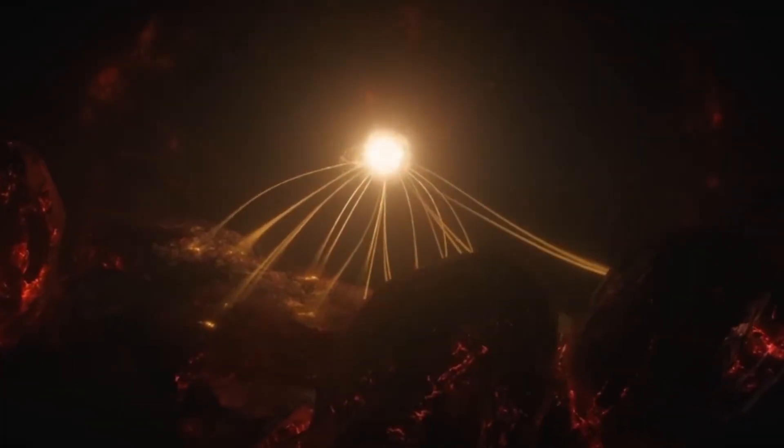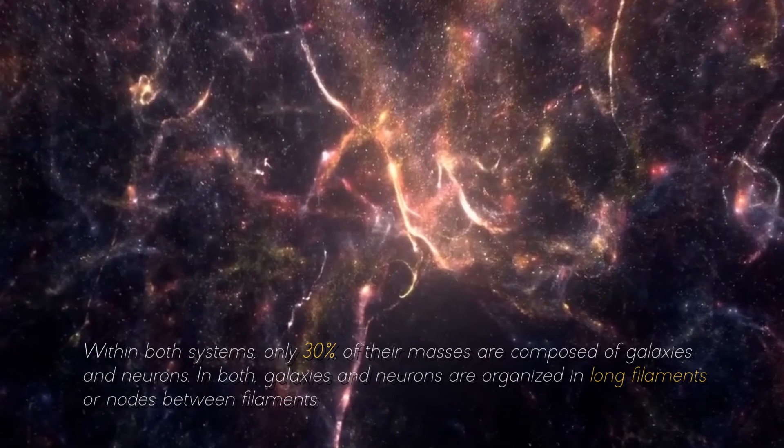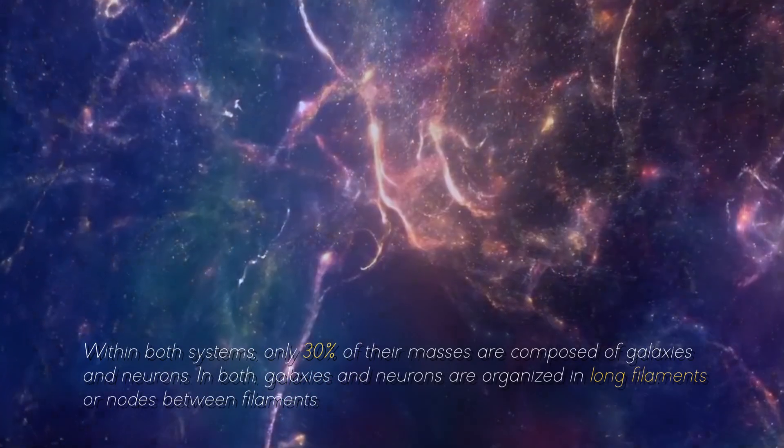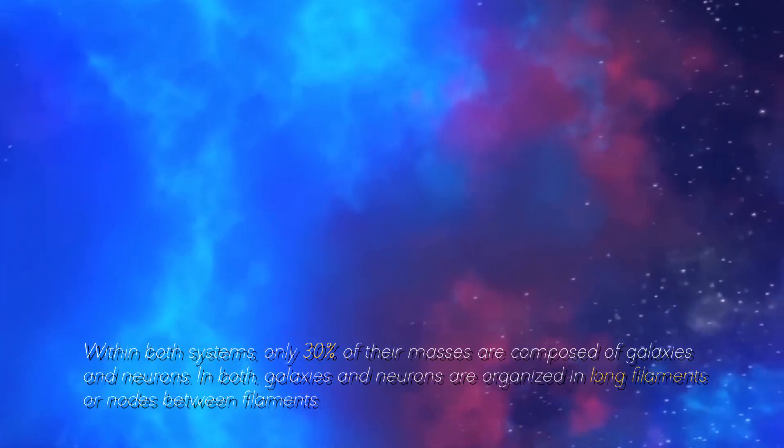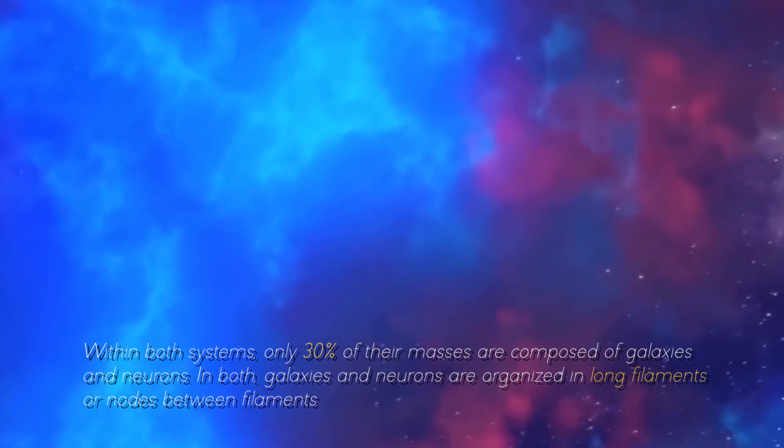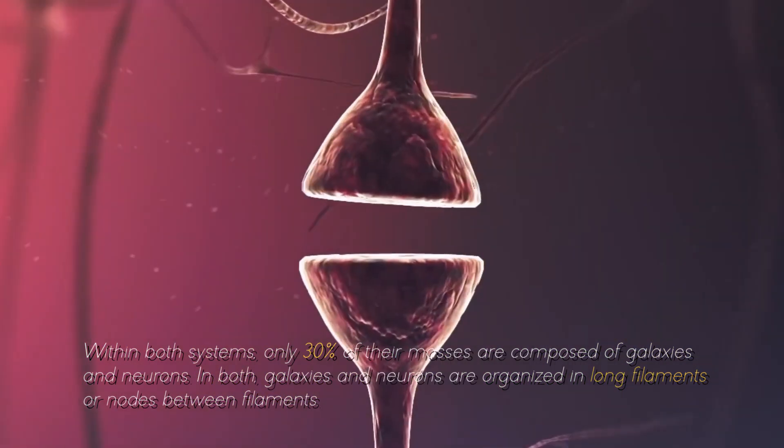Thus, it is not that our brain is like a universe, or that the universe is a brain of titanic proportions, but that their dynamics are similar. Within both systems, only 30% of the masses are composed of galaxies and neurons. In both, galaxies and neurons are organized in long filaments and nodes between filaments.